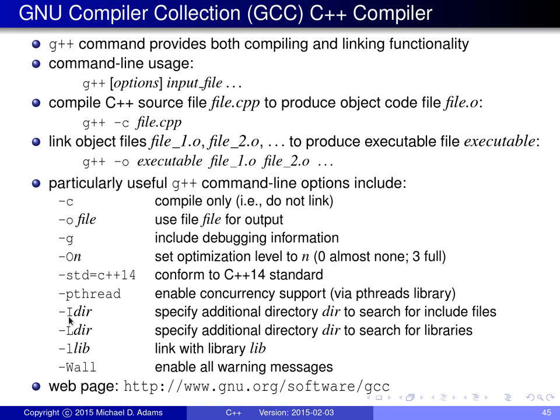You can specify multiple -I options if there are multiple directories to search. The -L option is used to specify additional directories in which to search for libraries during linking. Just as with include files, the linker has a default list of directories where it looks for libraries, but sometimes libraries are installed in non-standard locations. The -L option lets you add additional directories to that search list.